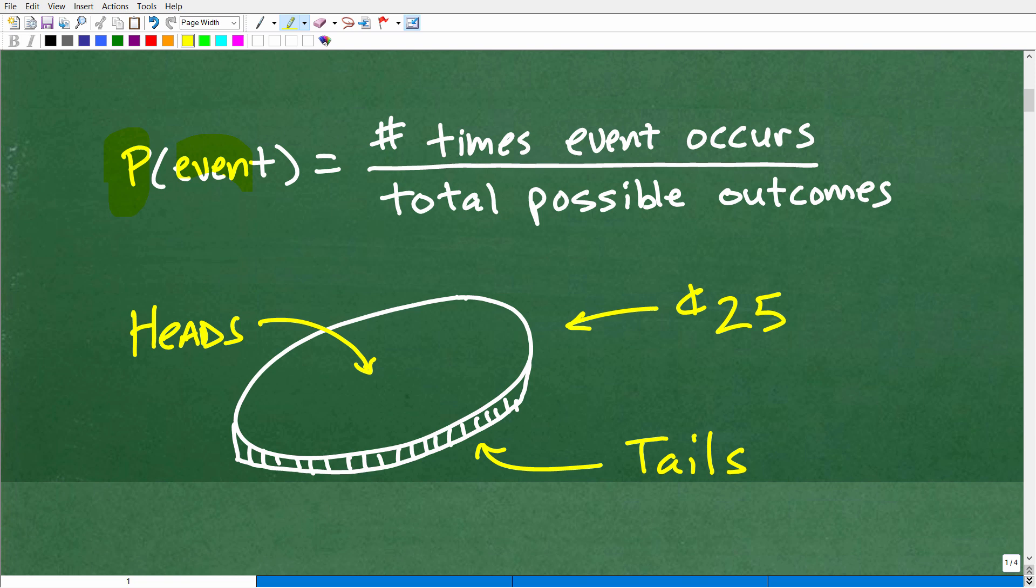So, the probability of an event occurring, we typically write it this way in math, P of the probability, kind of like a function, P of an event or probability of an event occurring is the number of times an event could occur over the total possible outcomes of that particular, what's surrounding that event. So, let's just kind of look at this definition in a more, use a practical example. So, here you can see I have my nice little quarter here. And we have heads on this side and tails on that side.